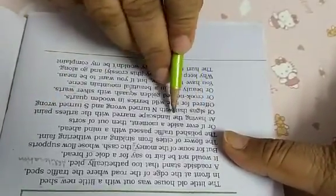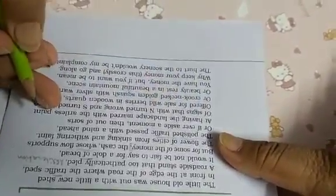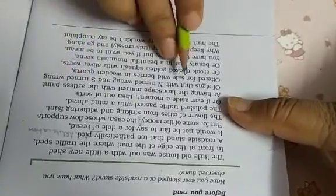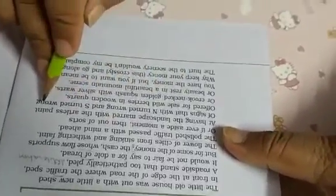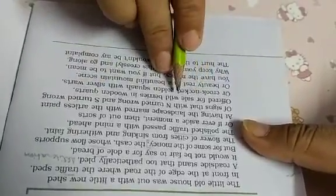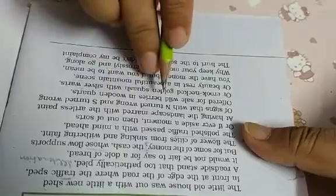Or if ever aside a mood bad—if by chance they are able to see that shop, then they don't feel happy. Their mood becomes off. Why becomes off? Then out of sorts at having the landscape marred with the artless paint, because the shopkeeper has not used the paint properly. Because he is not a perfect artist.